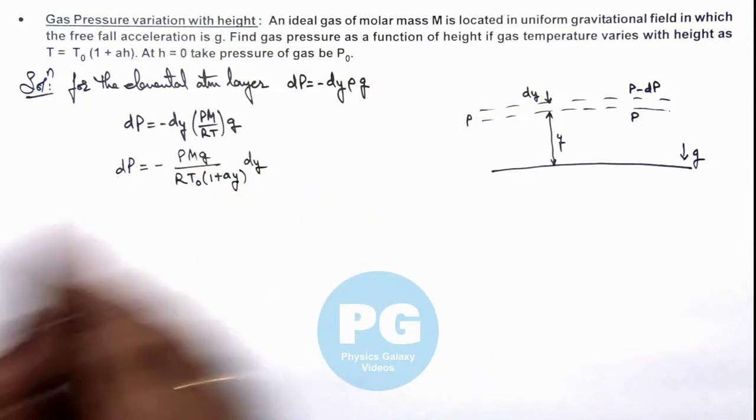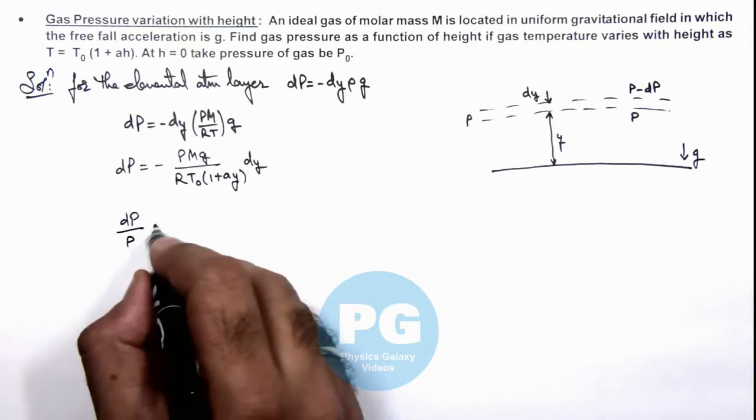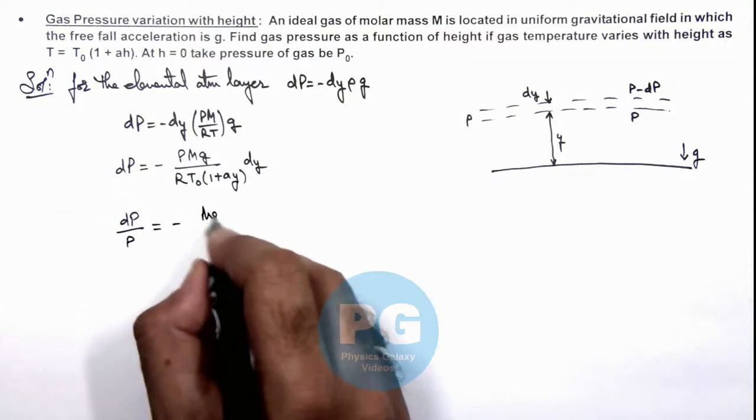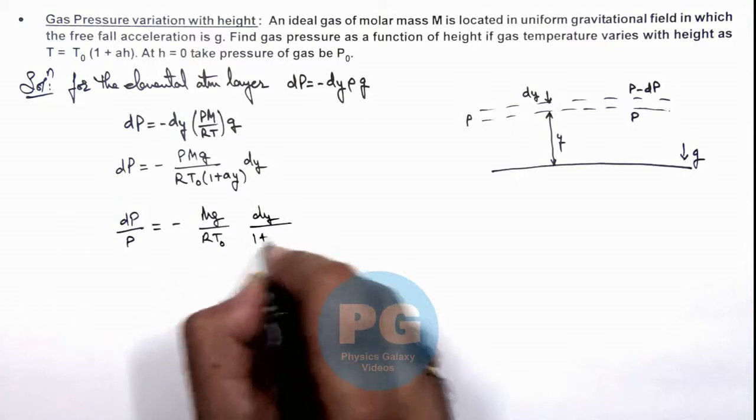Now this P can be taken on the other side, this becomes dP/P is equal to minus Mg/(RT₀) dy/(1 + αy). Now we can integrate these terms.